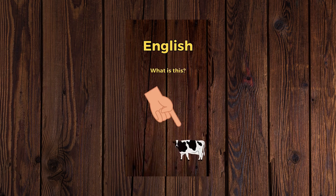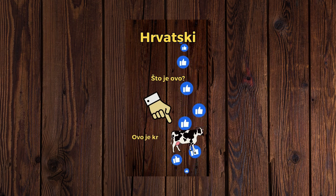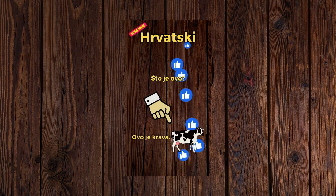What is this? This is a cow. Što je ovo? Ovo je krava.